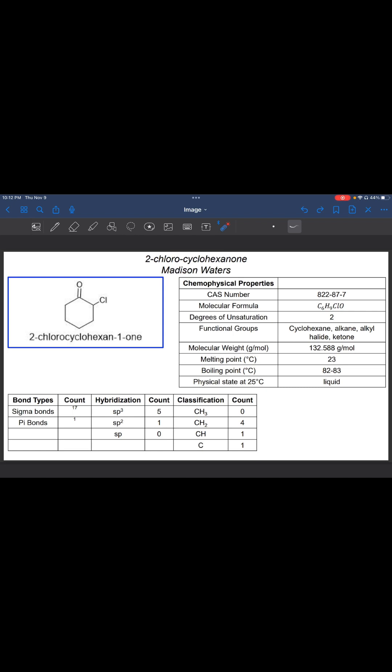There are 17 sigma bonds in this structure, seen here between this carbon and that carbon. So 1, 2, 3, 4, 5, 6. Then one of these is going to be a sigma bond, the other is going to be a pi bond, we'll talk about that later. So that's 7.